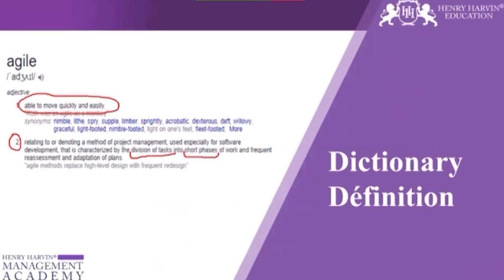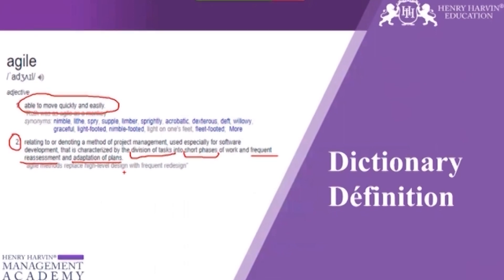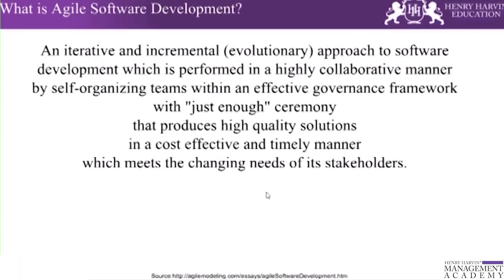These words have very significant meanings in agile. If we are implementing any agile method, there is a division of tasks into shorter duration cycles, a frequent reassessment which we can call a feedback cycle, and because changes happen within the process, there is adaptation of the plan. This is the dictionary definition of agile and what it means to us.